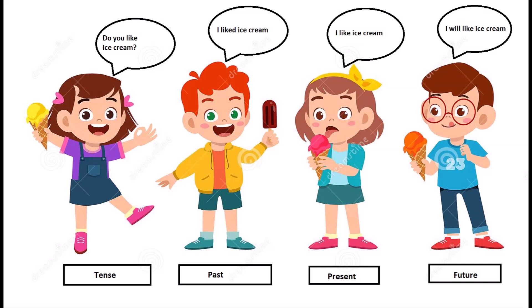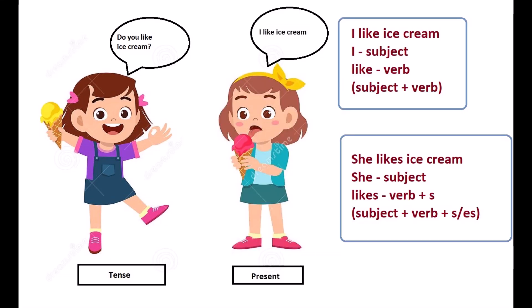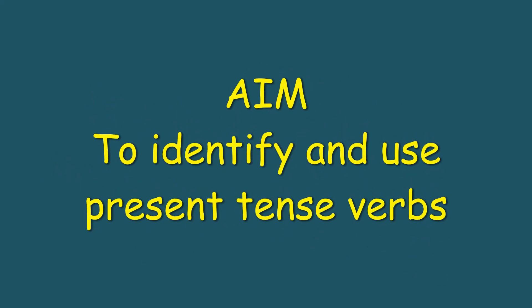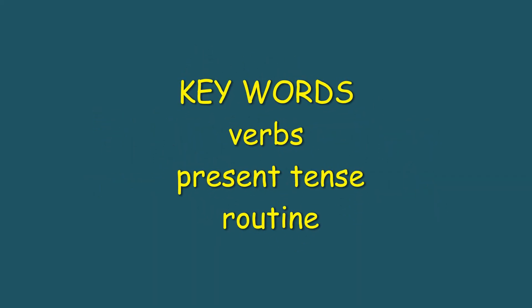Now, our Tense is so happy with the reply of present as she has used present form of verb like. And now we have present and tense together as present tense. So, children, today's aim is to identify and use present tense verbs. And the key words are verbs, present tense, routine.